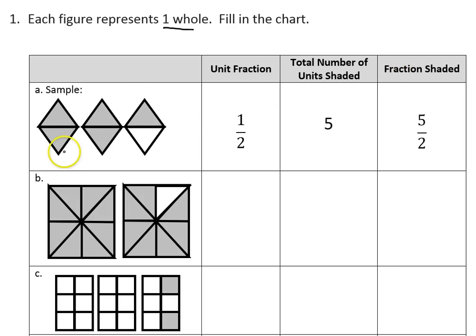The key here is that each of these shapes is considered one whole. We need to focus on just one shape when we determine our unit fraction. So if I look at my diamond, it's been divided into two pieces, so each piece would be considered one half.